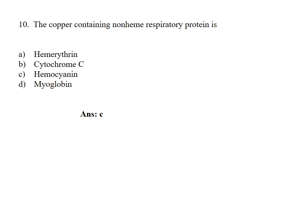The copper containing non-heme respiratory protein is: Option A, Hemerythrin; B, Cytochrome C; C, Hemocyanin; D, Myoglobin. Answer Option C, Hemocyanin.